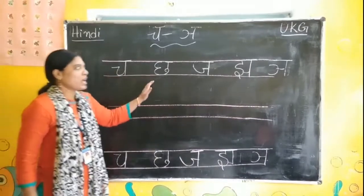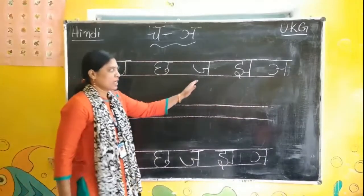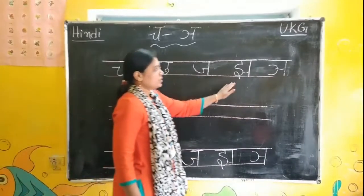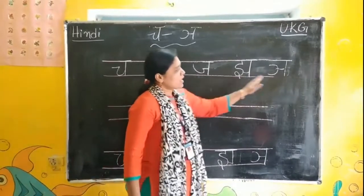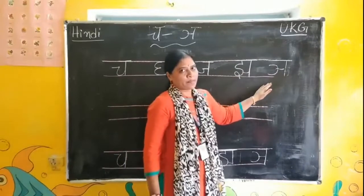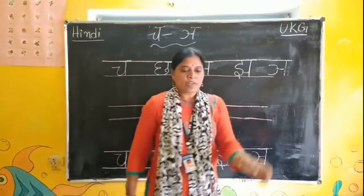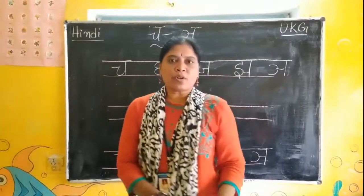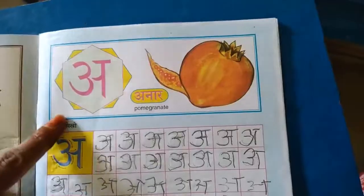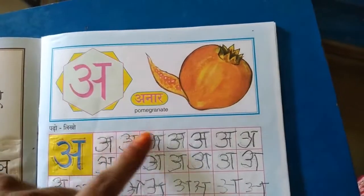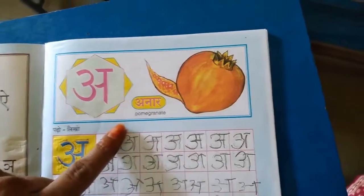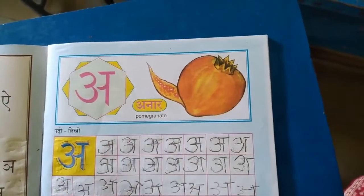Cha, Cha, Ja, Jha, Illi. We will read pictures also. A se Anar — pomegranate.